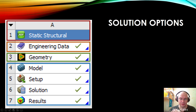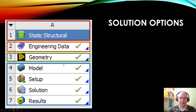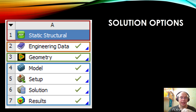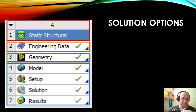In some stages we can start several types of application. For example, in Geometry we will talk about this later. The same stages on different types of analysis can start different applications. For static structural, stages from Model to Result start ANSYS Mechanical. For CFD, the Model stage starts ANSYS Mechanical, and the Setup, Solution, and Result stages start CFX Pre, CFX Solver, and CFX Post.